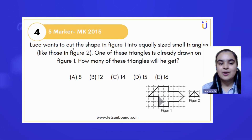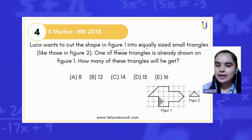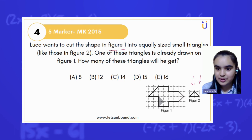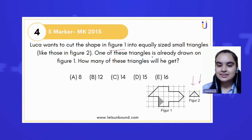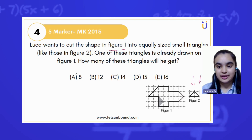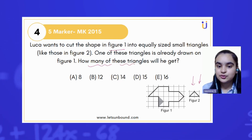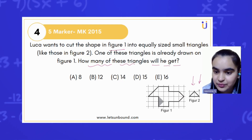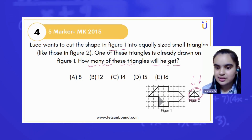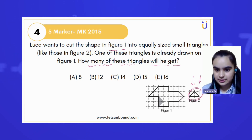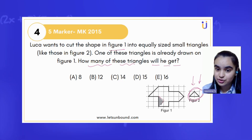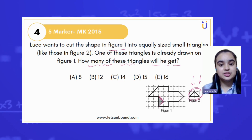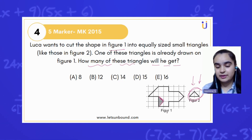The question is: Luca wants to cut the shape in figure one into equally sized small triangles that are shown in figure two. One of these triangles is already drawn on figure one. How many of these triangles will he get? Luca wants such tiny little triangles, and one of them is already drawn on figure one. We have to tell how many triangles will be needed out of the whole figure.